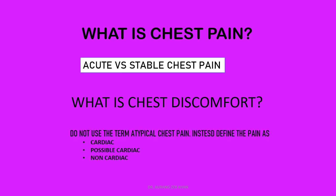Do not use the term atypical chest pain. Instead, define the pain as cardiac, possible cardiac, and non-cardiac. Chest pain has been traditionally stratified into typical and atypical types. Chest pain more likely associated with ischemia consists of substernal chest discomfort provoked by exertion or emotional stress and relieved by rest or nitroglycerine. The more classic the chest discomfort based on quality, location, radiation, and provoking and relieving factors, the more likely it is to be of cardiac ischemic origin.